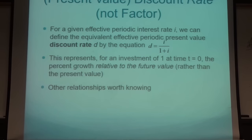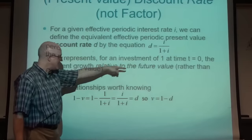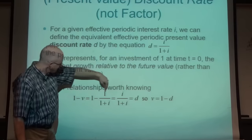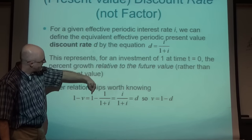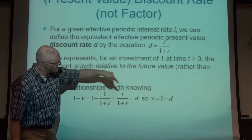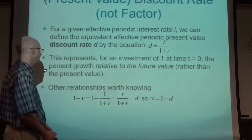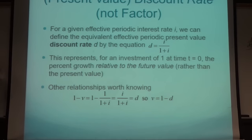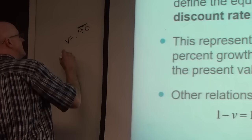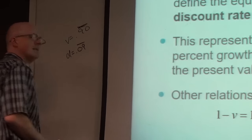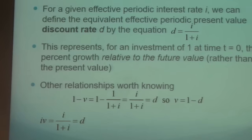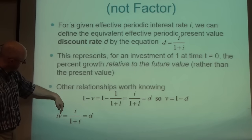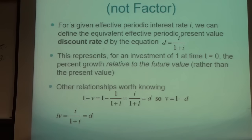Key relationships between D, i, and v: D = i/(1+i) = 1-v. Verification: 1-v = 1 - 1/(1+i); with common denominator (1+i) the numerator becomes 1+i-1 = i, giving D = i/(1+i). Therefore v = 1-D, so v and D add to 1. With v ≈ 0.909̄, D would be ≈ 0.0909̄. Also, i·v = D.